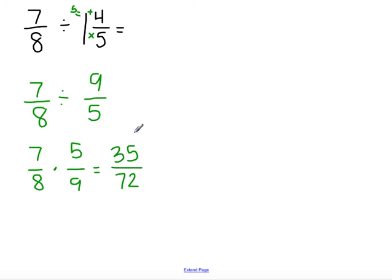Now, I need to figure out if there is a number that goes into both 35 and 72. 5 doesn't work, 2 doesn't work, they are both, or 1 is odd, 1 is even. So, I think that this is as simplified as it can get, so that would be my final answer.